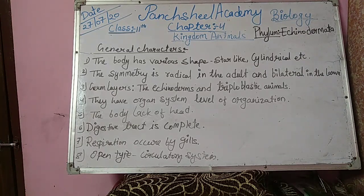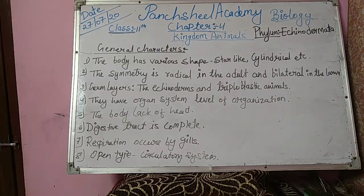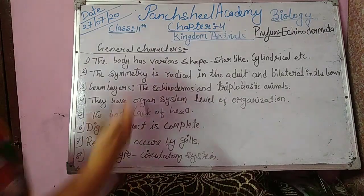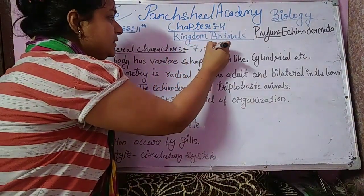Echinopluteus in sea urchins, or auricularia in sea cucumber. Natural history: all Echinodermata are marine. They generally live at the bottom and are slow-moving animals. Some are pelagic and few are sedentary. Approximately 7,000 species of Echinodermata are known.